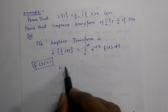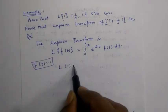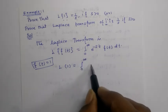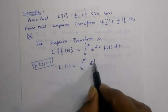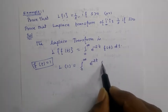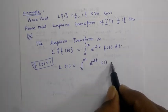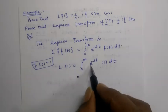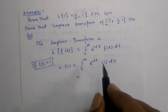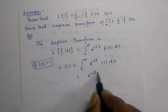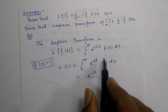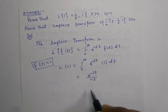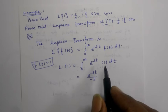We write the integral from 0 to infinity of e to the power minus s t, f of t, dt. The term e to the power minus s t divided by minus s t gives us minus s t, f of t, dt.